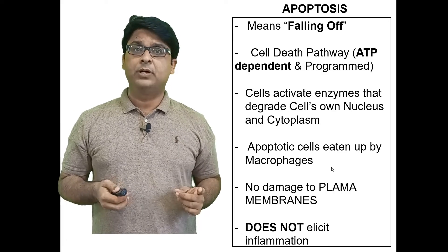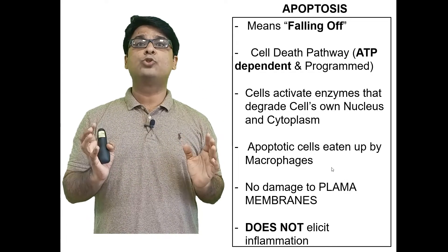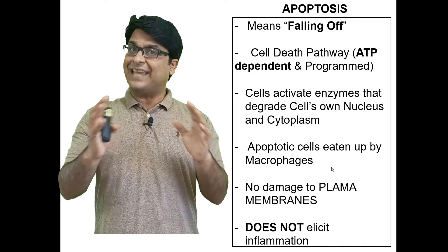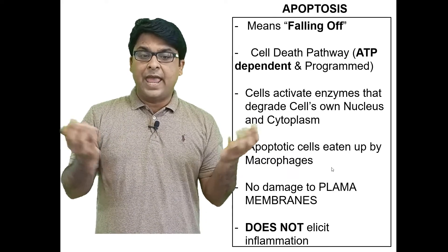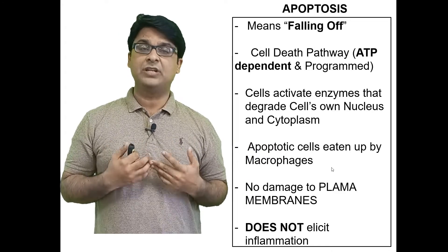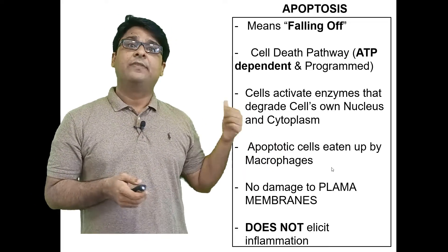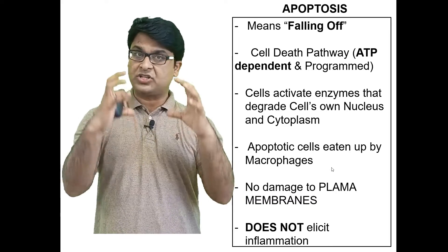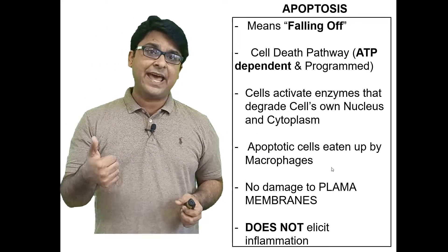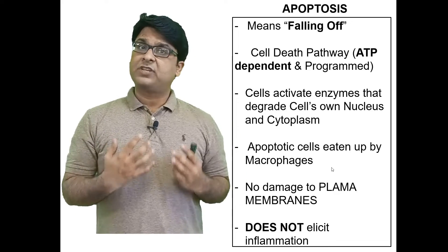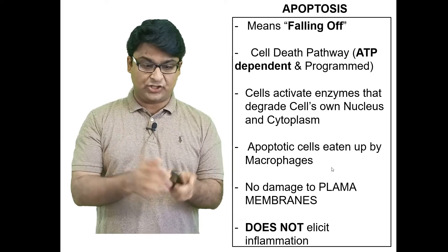One very important point about apoptosis is that throughout the process the cell membrane usually remains intact. Because the cell membrane remains intact, cellular enzymes and contents do not leak into the periphery, and since they do not leak there is no inflammation elicited. So what you need to remember: apoptosis is programmed cell death, it requires ATP, it produces apoptotic bodies taken up by macrophages, and it does not elicit inflammation.